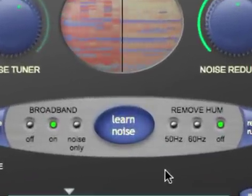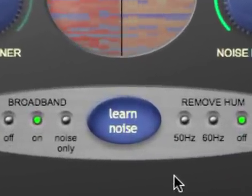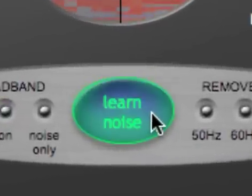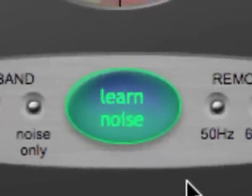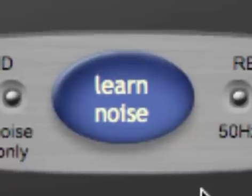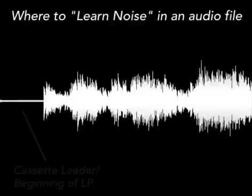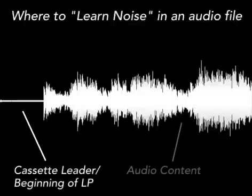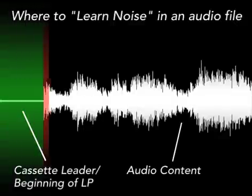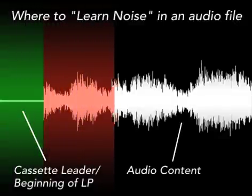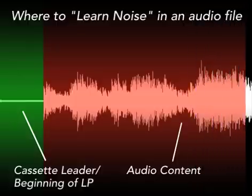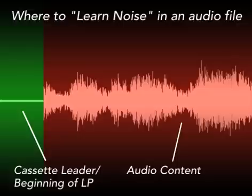The key to using SoundSoap is knowing where to learn noise for successful broadband noise reduction on sources such as tape hiss, HVAC system noise, fans, and other similar background noises. For example, with a cassette recording, you'll more than likely have hiss in the cassette's leader before any of the program material starts. This is the ideal place to learn noise, or you might have a space between two songs or between sections of speech.